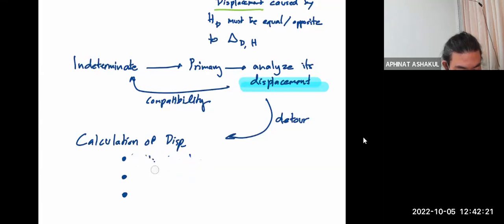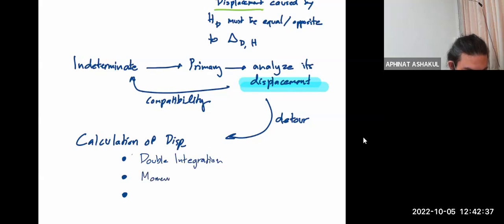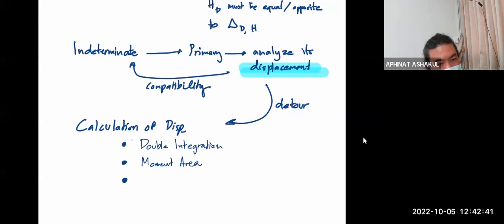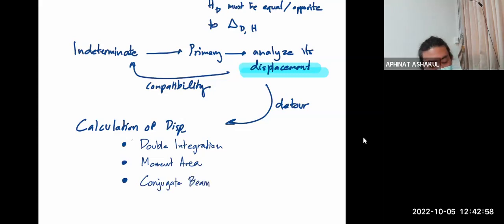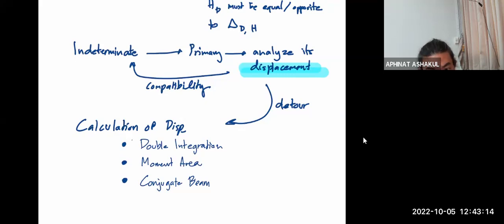Some students have complained the writing is too small. The third method I used to teach but don't think is necessary anymore — it's called the method of conjugate beam. It's pretty similar to moment-area, but it's facilitated by putting the moment diagram on your beam and calculating the shear and moment on your conjugate beam, which carries the shear force of the moment diagram, and you will get the displacement.